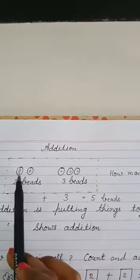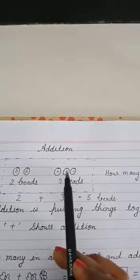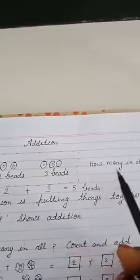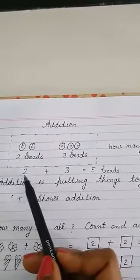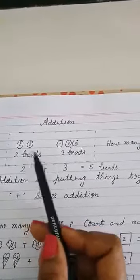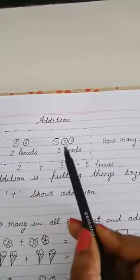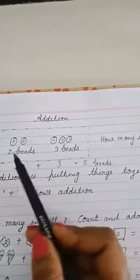Suppose this is two beads and this is three beads and we want to know how many beads in all. For that we need these two beads put together along with these three beads and then count.